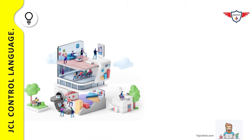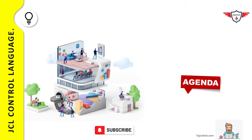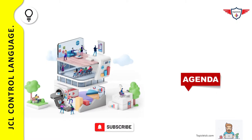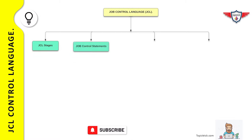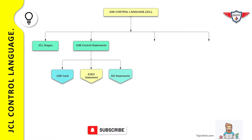So without wasting any time, let's focus on today's agenda. We start today's session with an introduction to IBM mainframe. Then we will try to understand the term JCL and why it is important from a mainframe perspective. Then we will deep dive into different stages of JCL followed by job control statements — including job card, execute statement, and DD statements. After that, we will look at different coding rules applicable when you write a JCL.